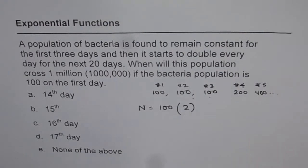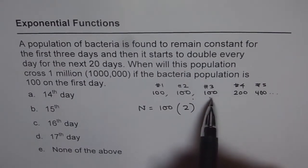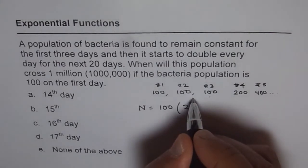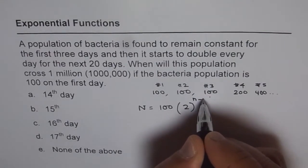But what is t? That t, the number of days, will be n minus three, because until the third day it doesn't double. So it is n minus three.